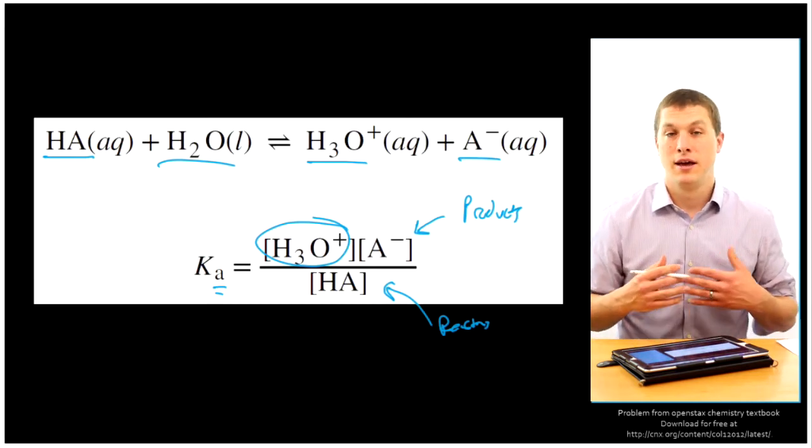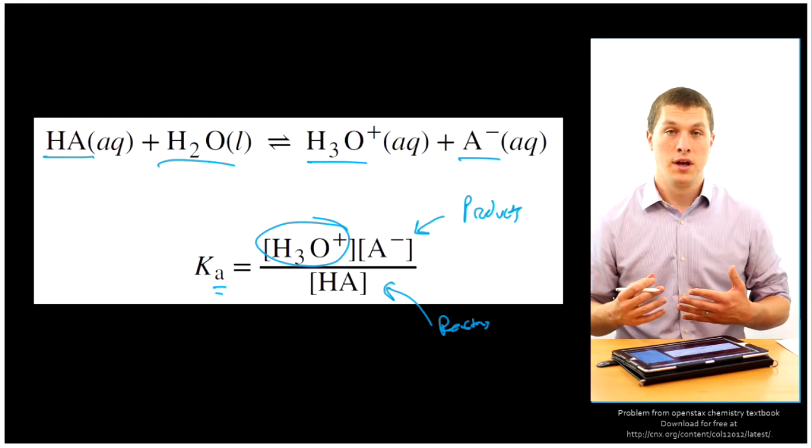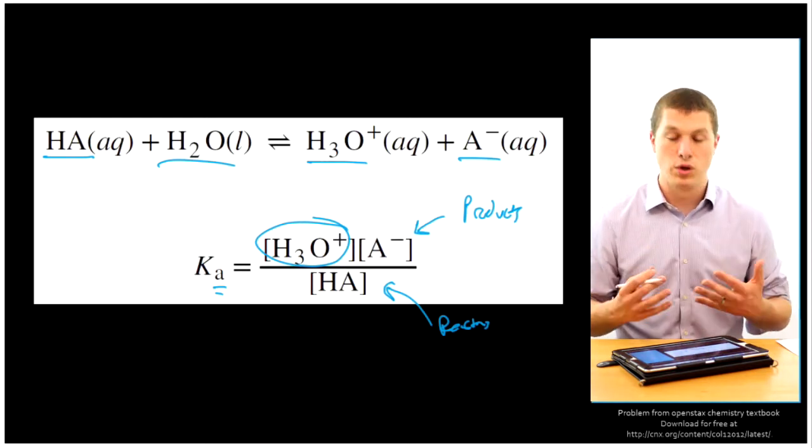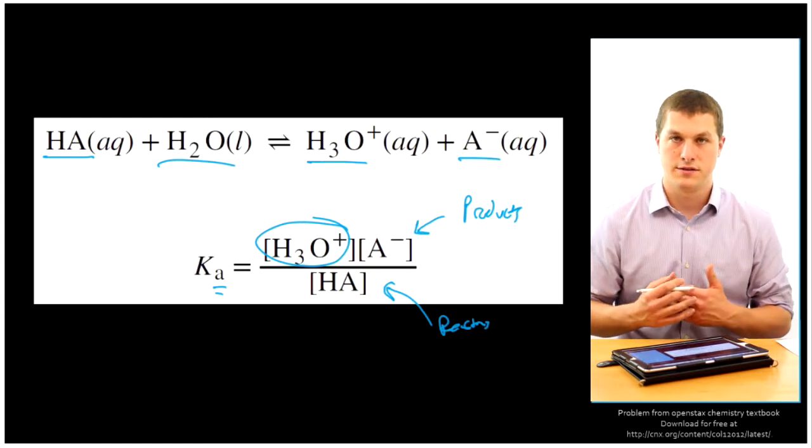So a big Ka means a strong acid, or I should say there's more hydrogen ions in solution. A small Ka will mean a weaker acid. So the bigger your Ka is, the more dissociation is happening. The smaller, the less dissociation is happening.